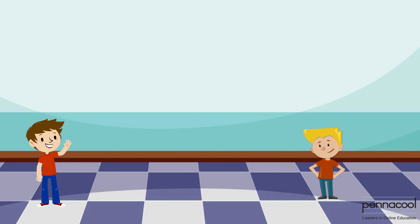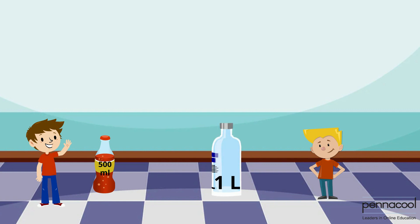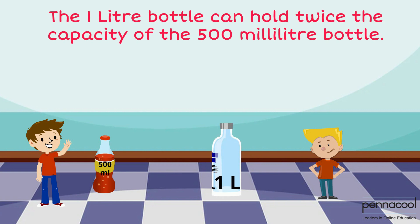Hans then hands Jonah a smaller soft drink bottle. The capacity written on the bottle is 500 ml, which is 500 millilitres. It is a smaller bottle than the 1L bottle that they examined earlier. The 1L bottle can hold twice the capacity of the 500 ml bottle.